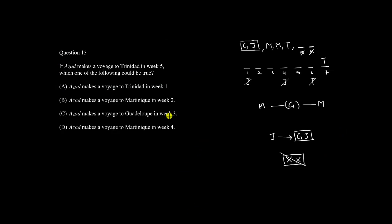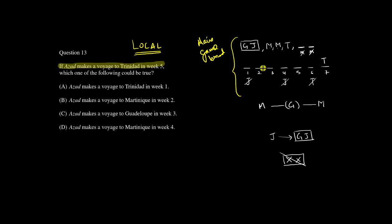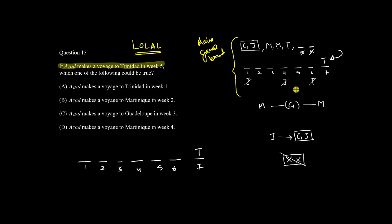Questions that give us additional piece of information I call local questions. Question 13 is a local question: if Azad makes a voyage to Trinidad in week five, which of the following could be true? Since this question gives us additional information, we do not write on the main diagram. Instead, we create a working diagram for this specific question with positions 1 through 7. We place T in position five, T in position seven from our fixed rule, then work out the GJ block possibilities.